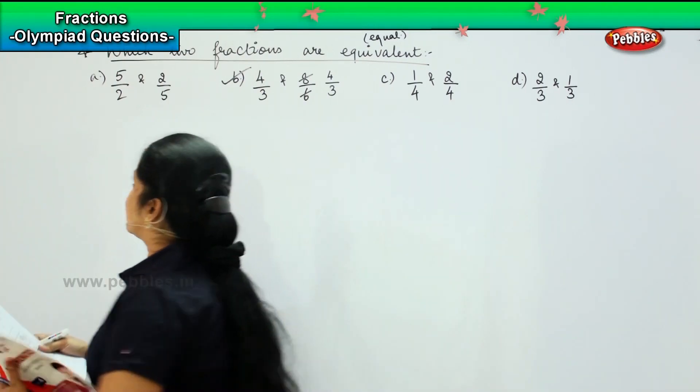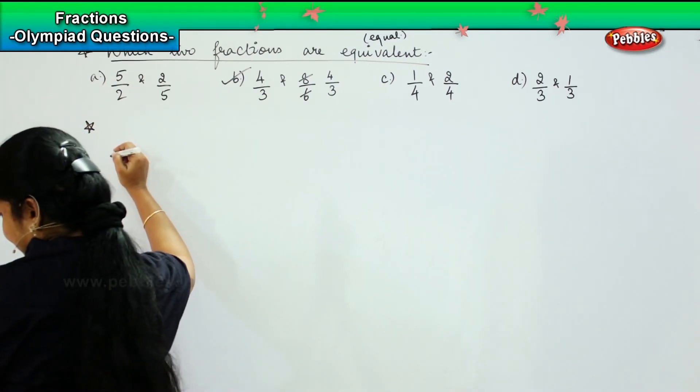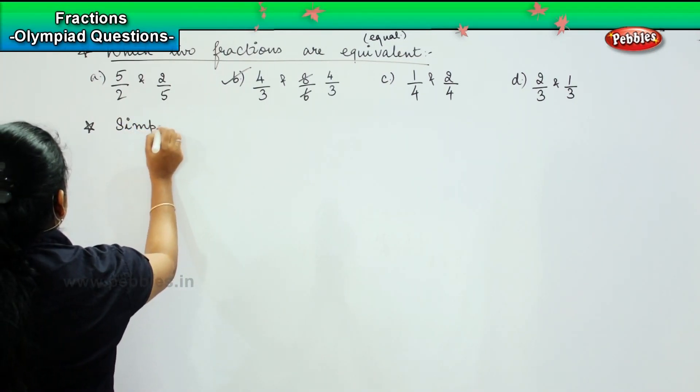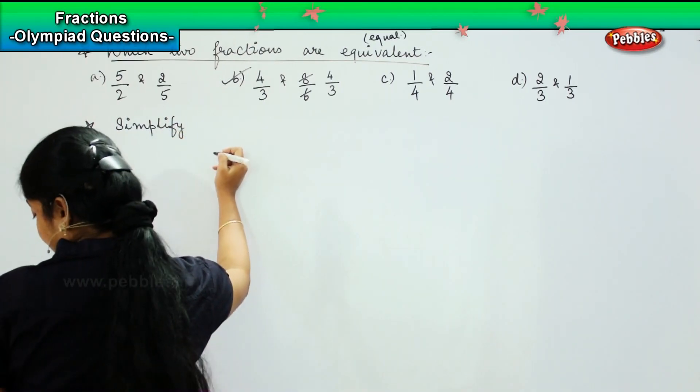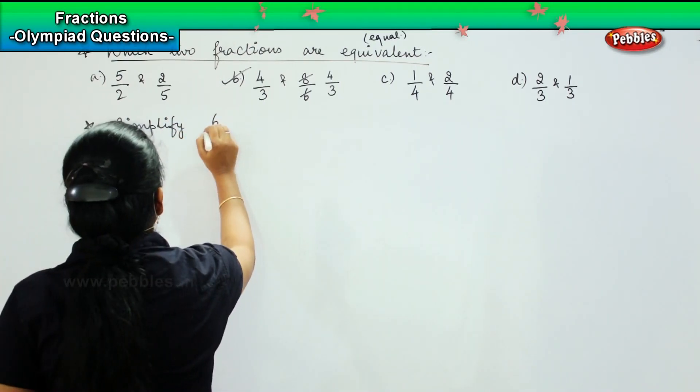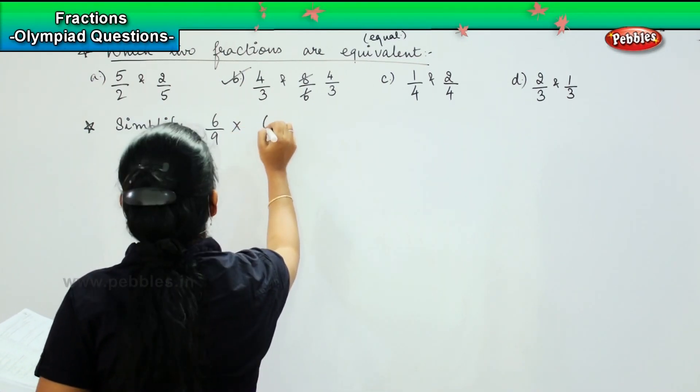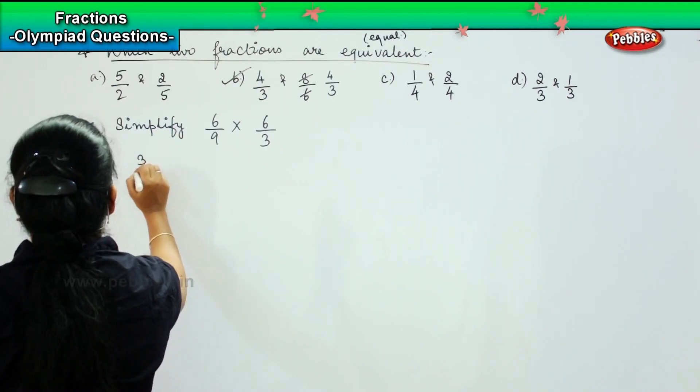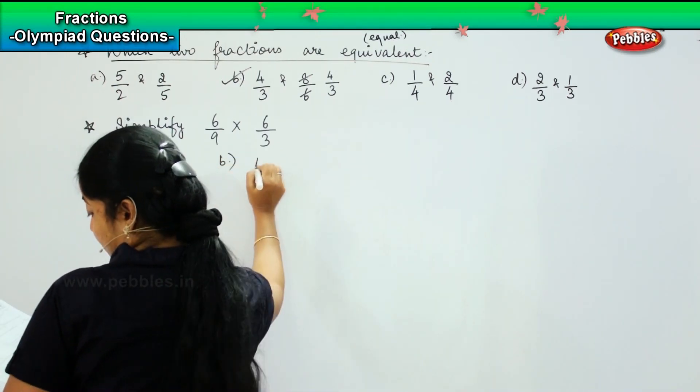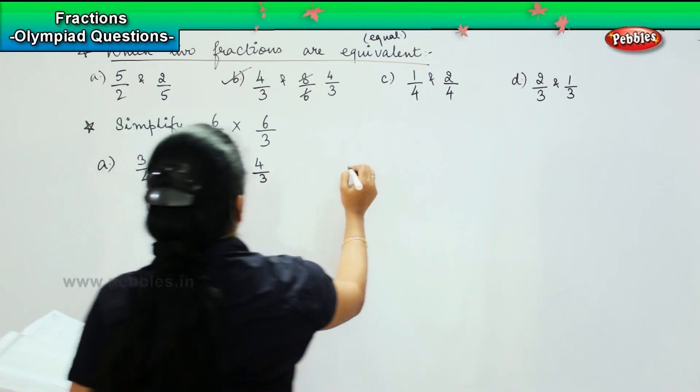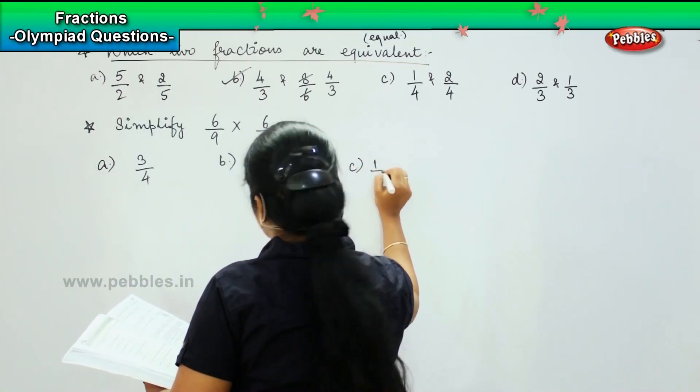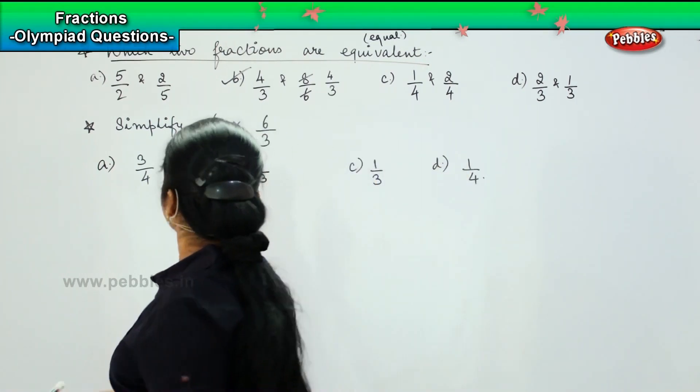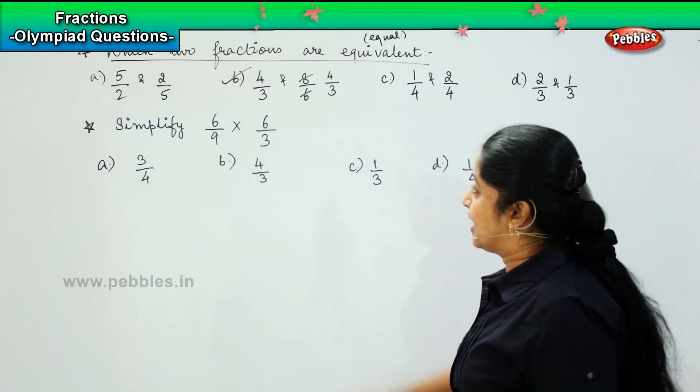Here is your next question. The question says: Simplify 6/9 times 6/3. Your options are: 3/4, option B: 4/3, option C: 1/3, and option D: 1/4.